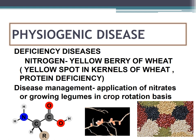Physiogenic disease deals with unfavorable environmental conditions such as variation in temperature, humidity, and chemicals. Deficiency disease is due to chemicals such as nitrogen, phosphorus, potassium, calcium, etc. One example is deficiency of nitrogen: in wheat, nitrogen deficiency can cause yellow berry of wheat. The kernels show yellow spots as symptoms, which are rich in starch but devoid of protein. Protein is made up of amino acids, and the amino acid structure contains the element nitrogen, so if there is no nitrogen, protein deficiency is obvious. Application of nitrates can control this physiogenic disease.